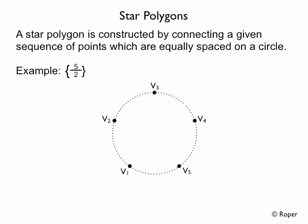So, for example, here we have 5 points: v1, v2, v3, v4, and v5, and we're going to connect every second point. So if we start from v1, we're going to skip v2 and connect v1 to v3. Then we're going to skip v4 and connect v3 to v5.